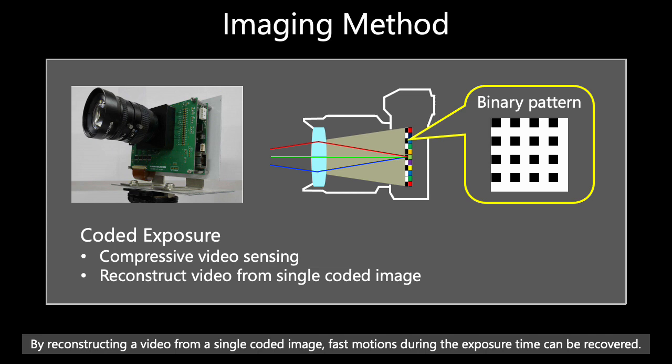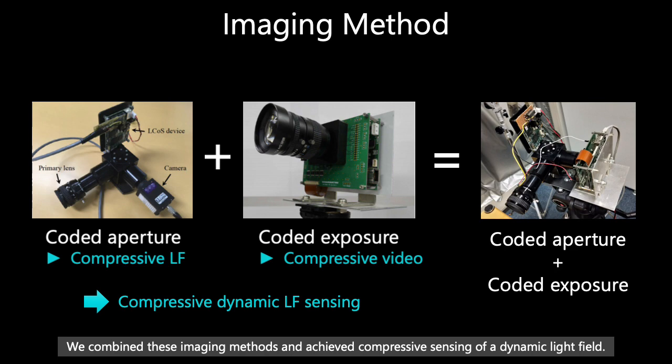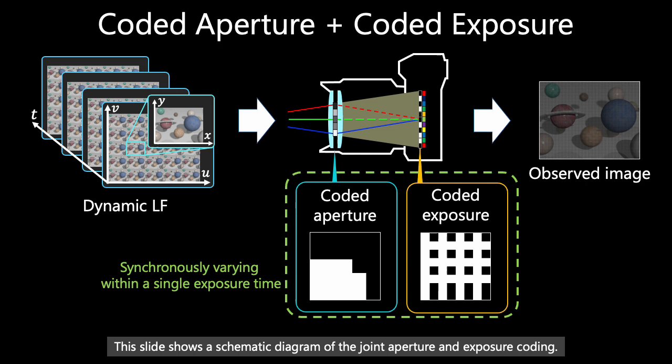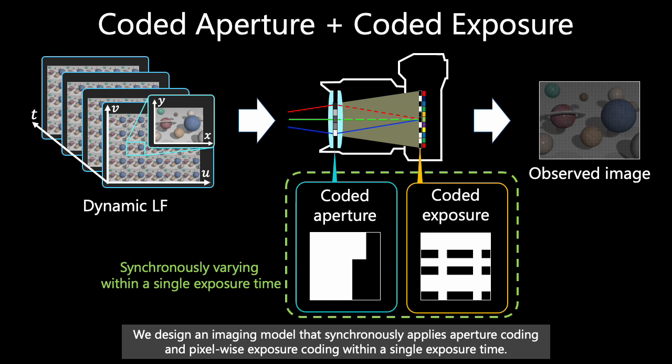We combined these imaging methods and achieved compressive sensing of a dynamic light field. This slide shows a schematic diagram of a joint aperture and exposure coding.